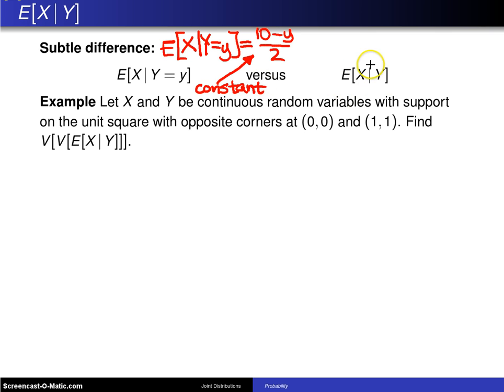This one right here is a random variable. If we were to look to the previous page and calculate the expected value of X given Y, in this case we would not put in the value little y. We would leave it as an uppercase Y, and we would have 10 minus uppercase Y divided by 2. The key here is this is a random variable as opposed to a constant.